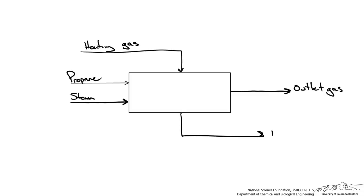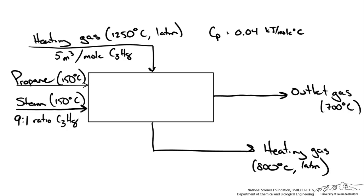The heating gas exits the reactor on the other side. It is only coming in contact with the reactor to heat up the catalyst and the reactor itself — it is not interacting with the inside of the process. We want to determine the composition of this outlet gas, so we enter our unknowns: five flow rates N1 through N5 representing the moles leaving in the outlet gas.